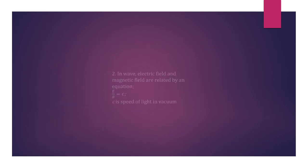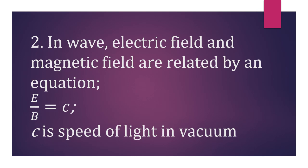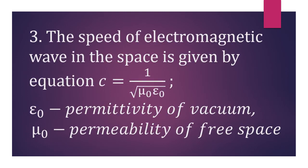Second characteristic: in a wave, electric field and magnetic field are related by the equation E/B = c, where c is the speed of light in vacuum. Third: the speed of an electromagnetic wave in space is given by c = 1/√(μ₀ε₀), where ε₀ is the permittivity of vacuum and μ₀ is the permeability of free space.